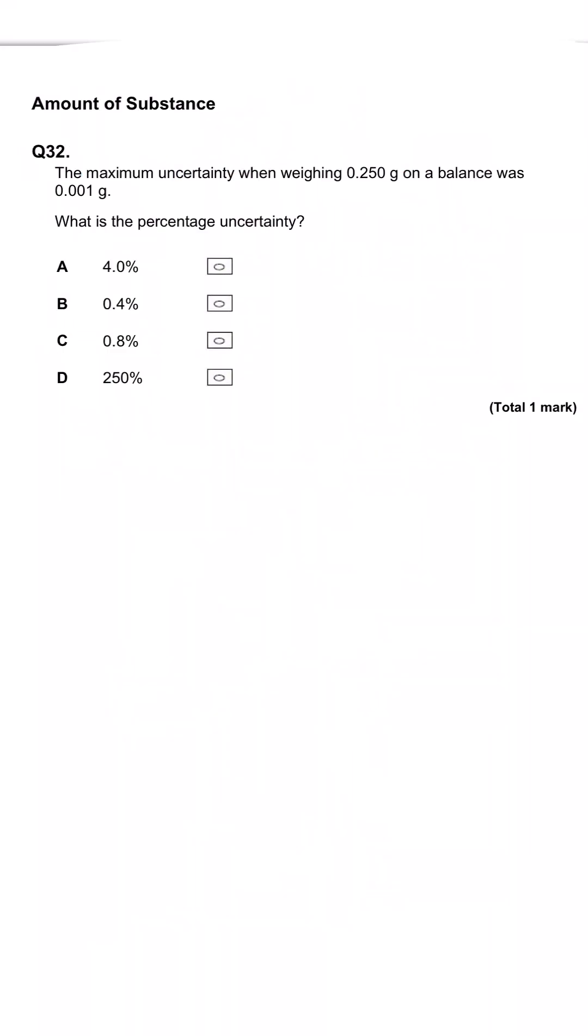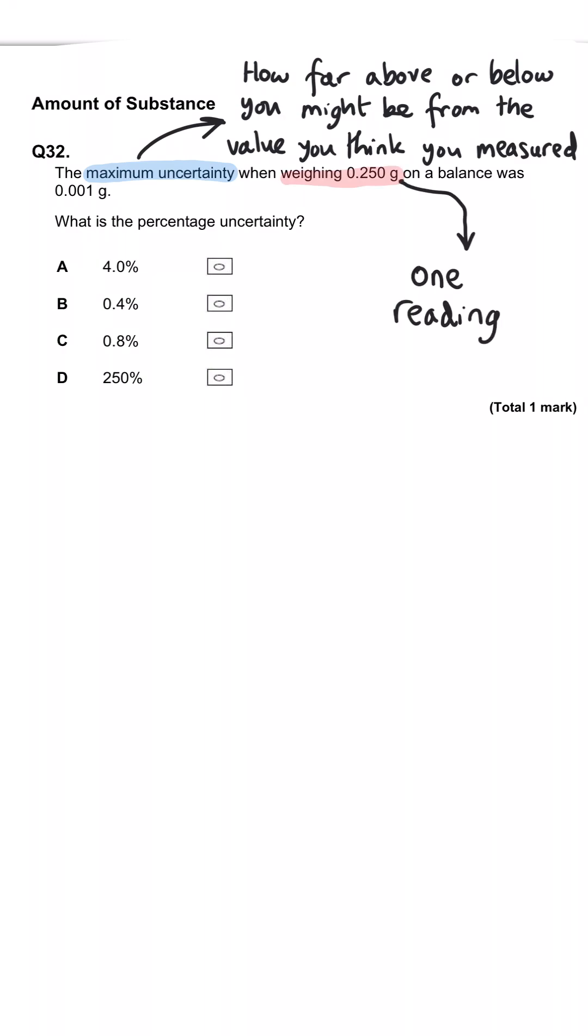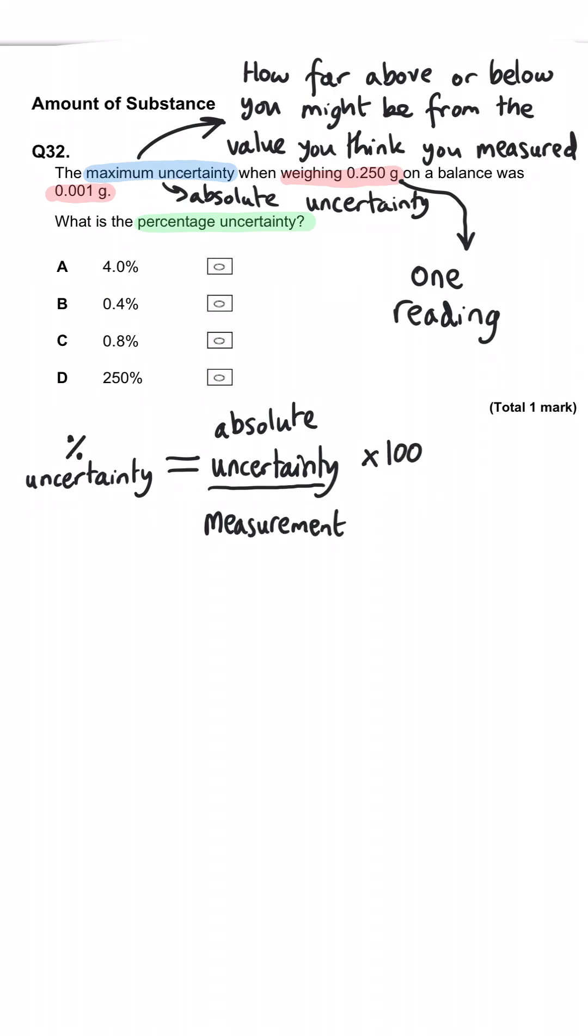The maximum uncertainty when weighing 0.250 grams on a balance was 0.001 grams. What is the percentage uncertainty? Well, percentage uncertainty is found by taking the absolute uncertainty, that they've called the maximum uncertainty here, we divide it by what we're measuring, and we multiply it by 100.